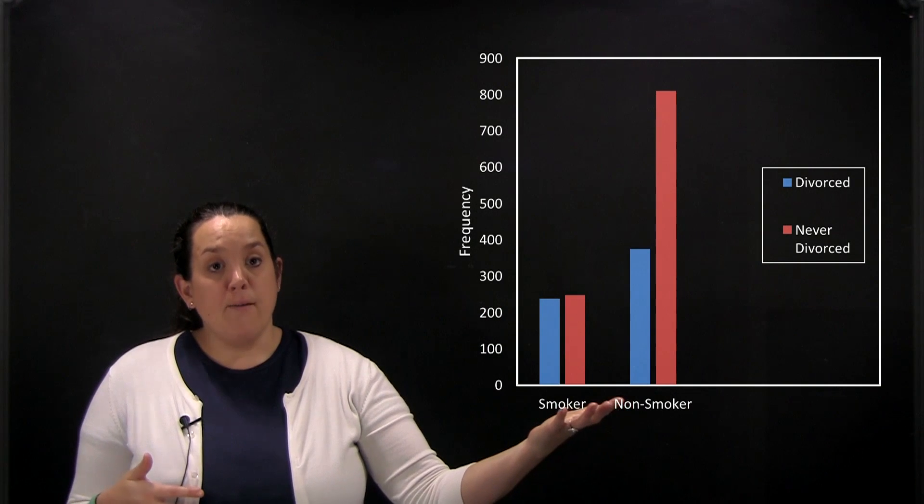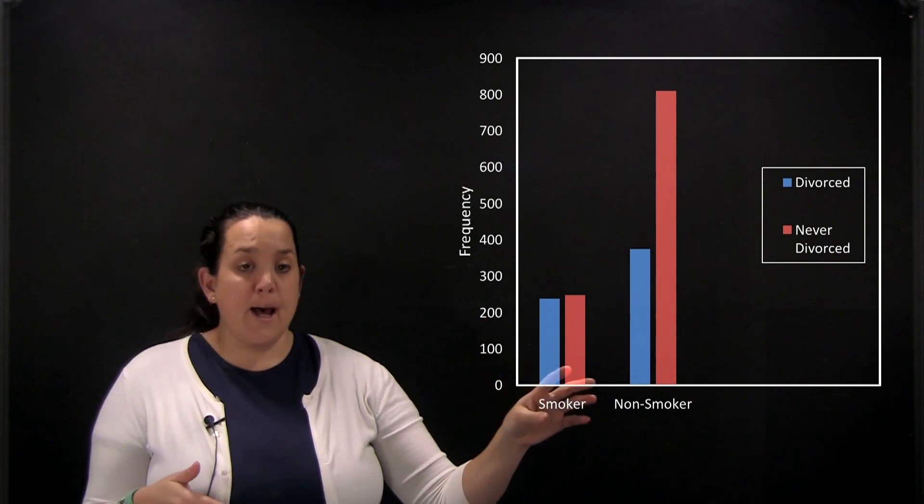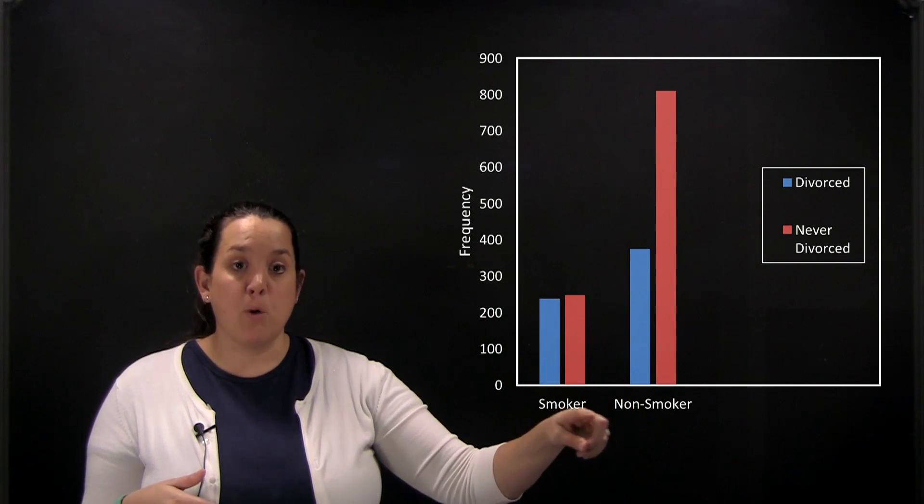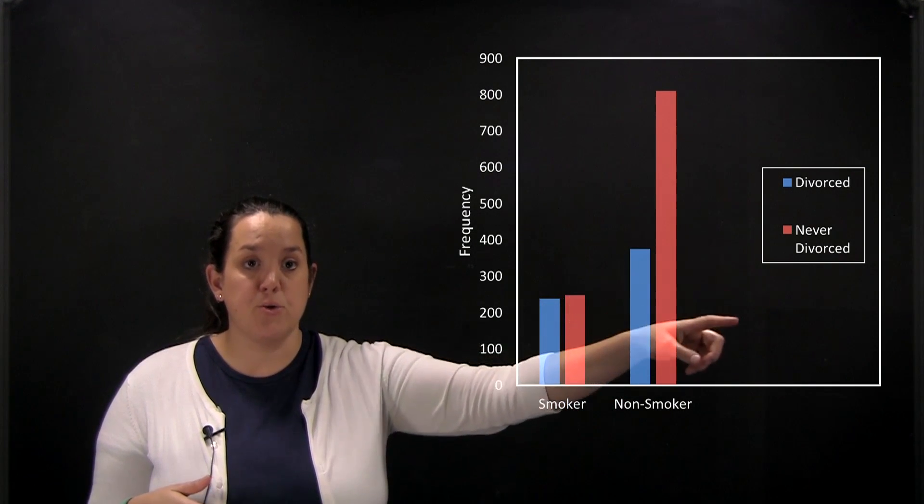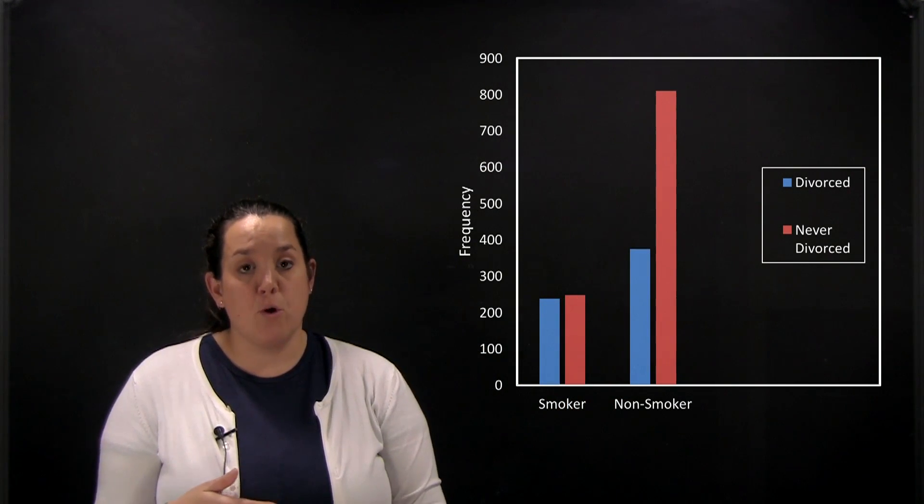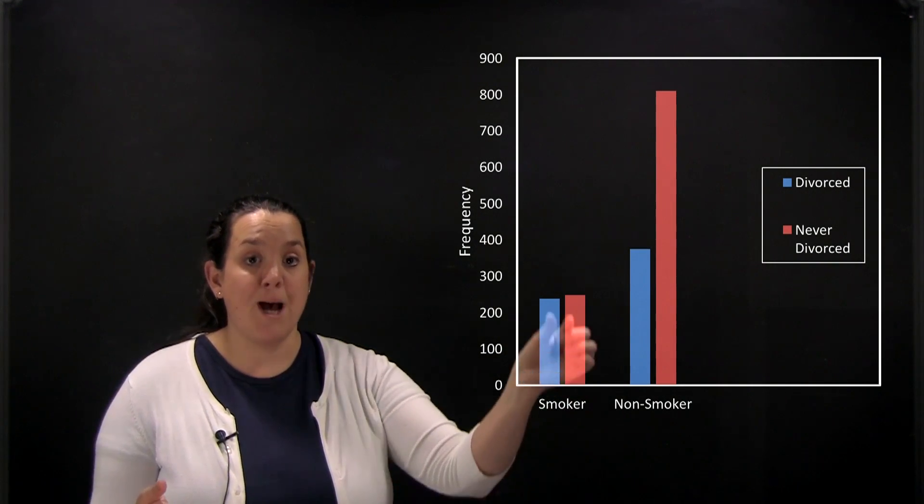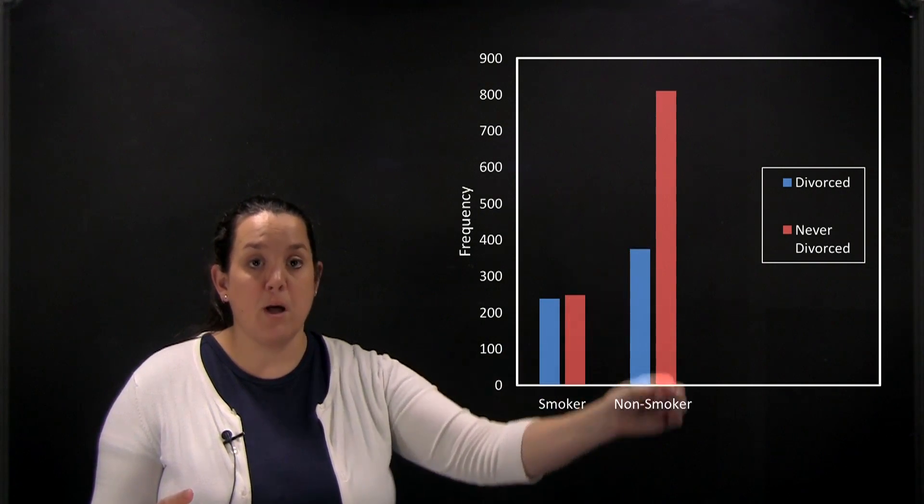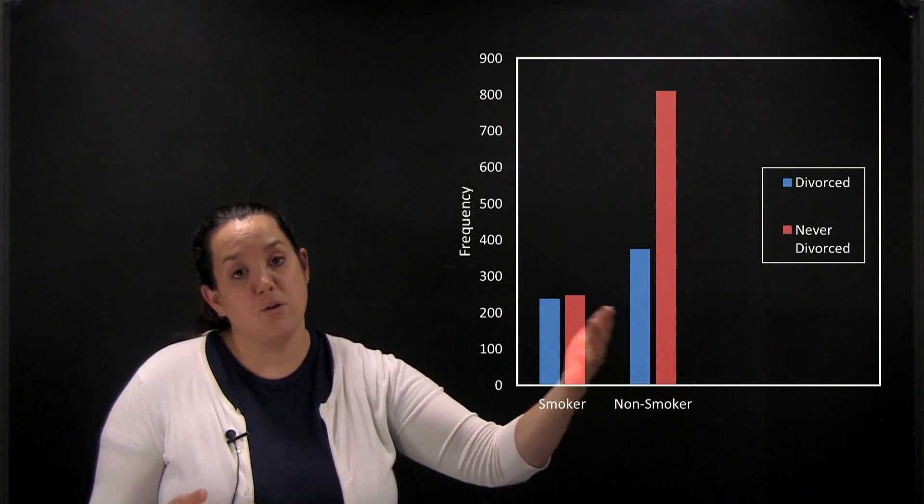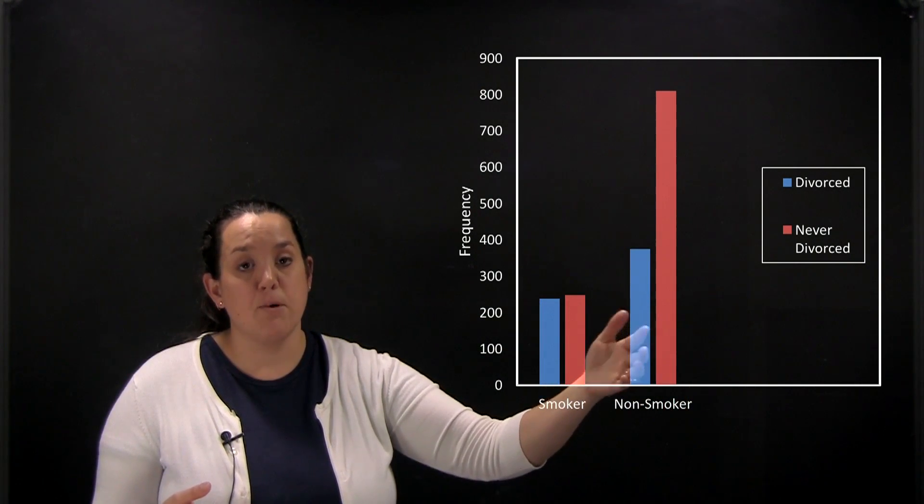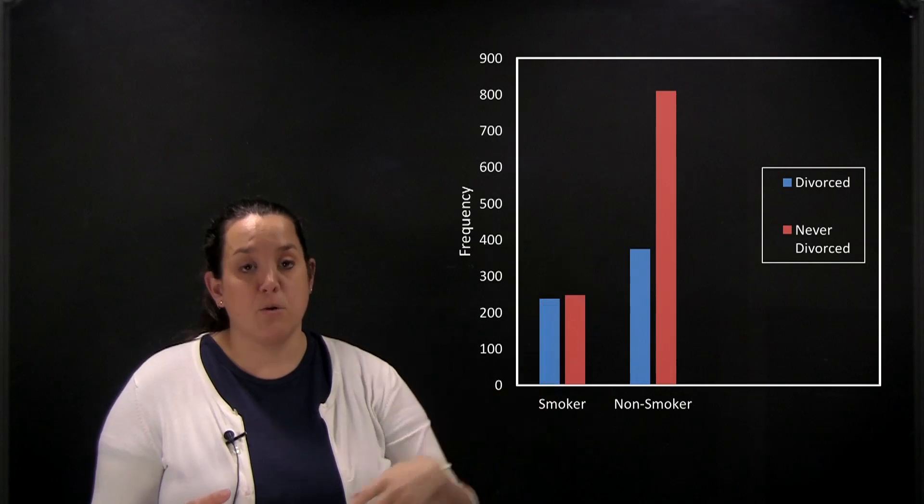With this bar graph, it's looking at the bivariate data: smoking status compared to if somebody has ever been divorced. If you were to see this in a contingency table format, each of the bars would be made up of its own cell. So this would be a two-by-two table or there would be four cells represented.